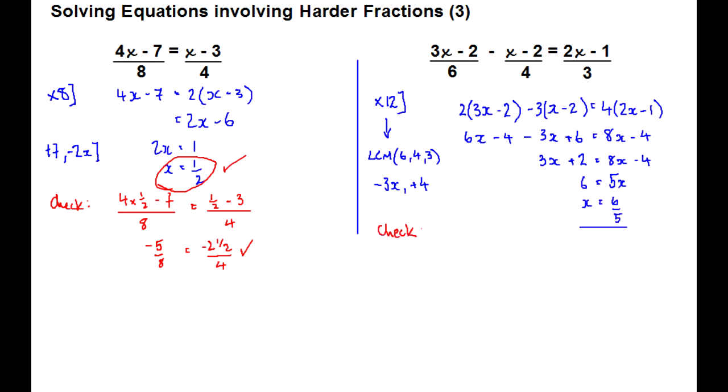And then, because it's algebra, we can check our answer by substitution. Nice and easy. So 3 lots of 6 over 5, take away 2, which I've written as 10 over 5, divided by 6. Take away 6 over 5, take away 2, which I'm writing as 10 over 5, divided by 4, equals 2 lots of 6 over 5, 12 over 5, take away 1, which is 5 over 5, and that's divided by 3. So if we look at our fractions, we've got 8.